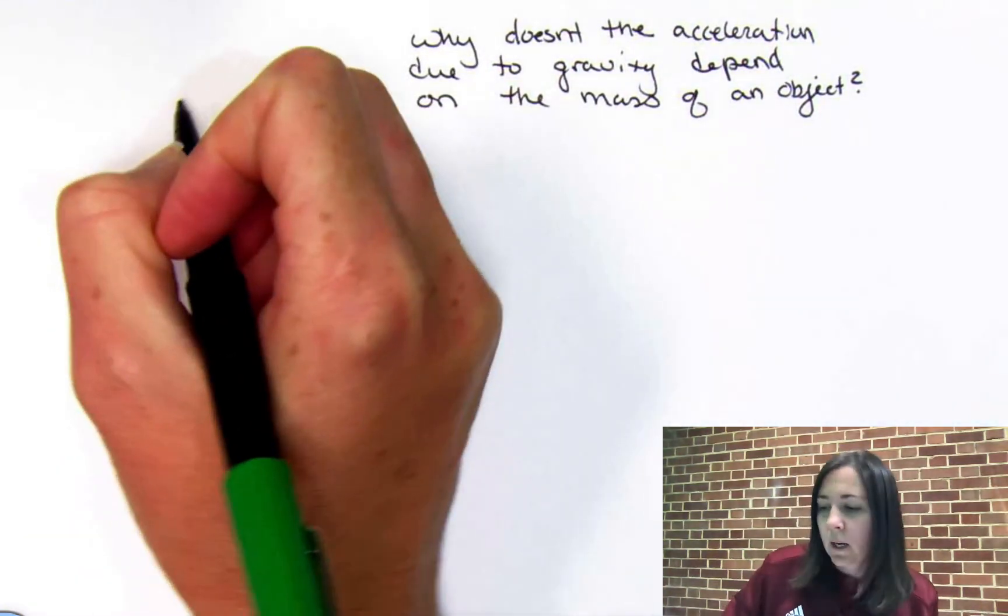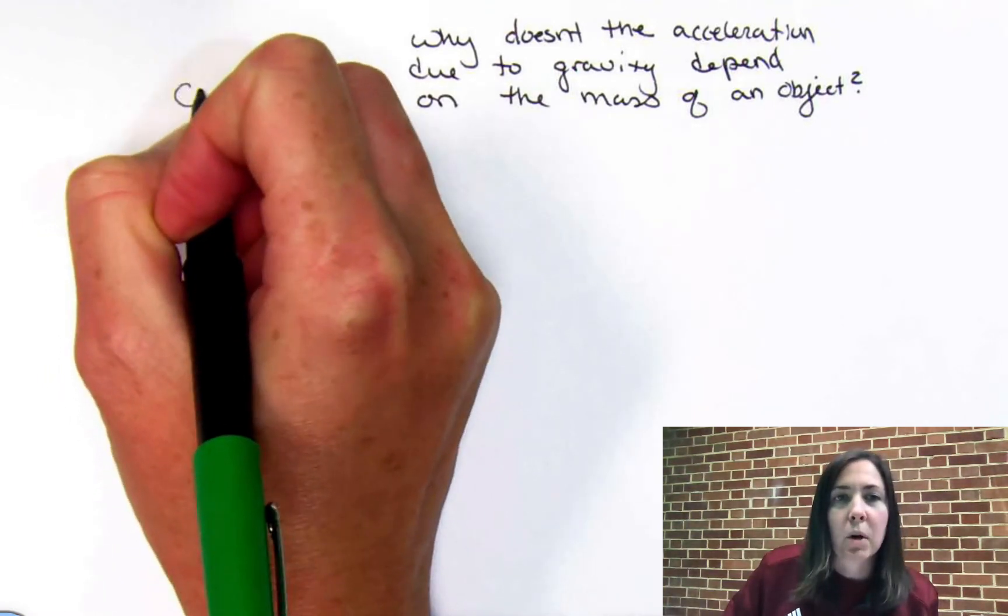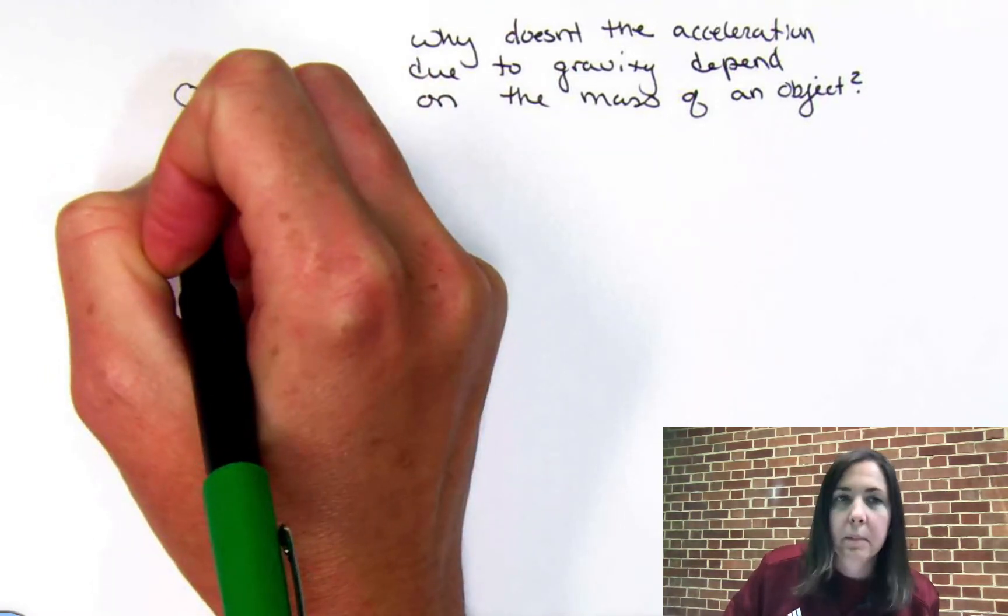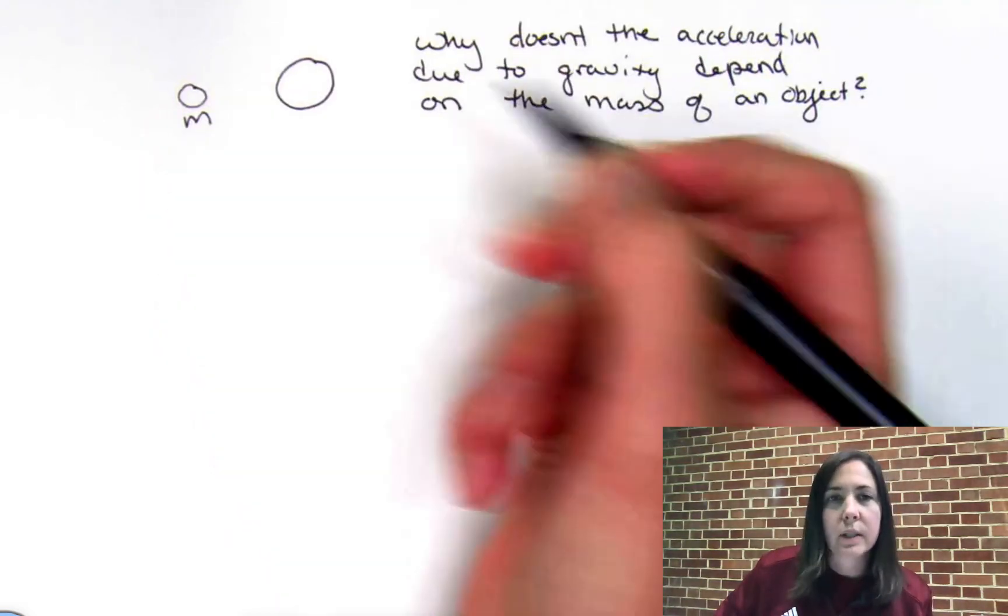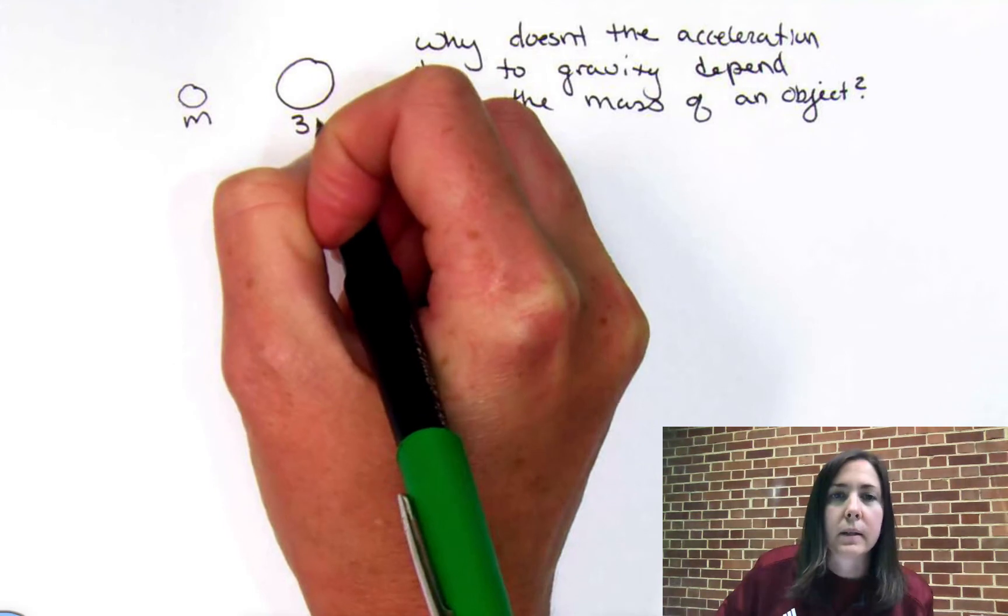So, let's say I have two rocks. I have a small rock with mass m, and I have a big rock, and let's just be crazy and call it three times the mass.